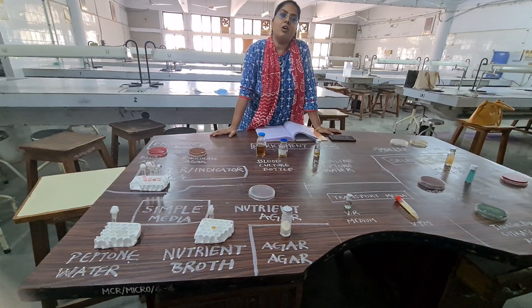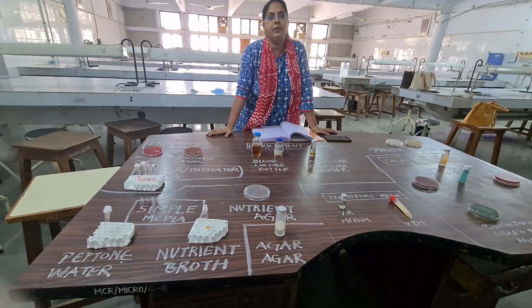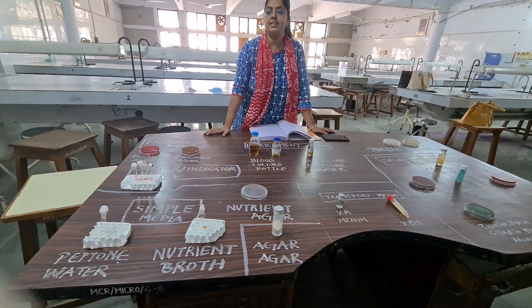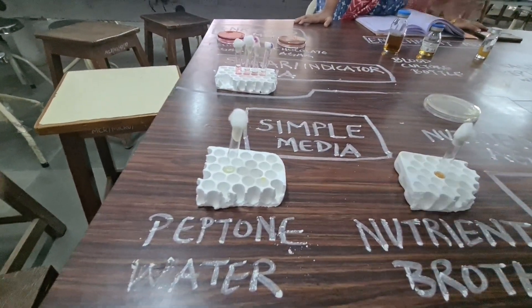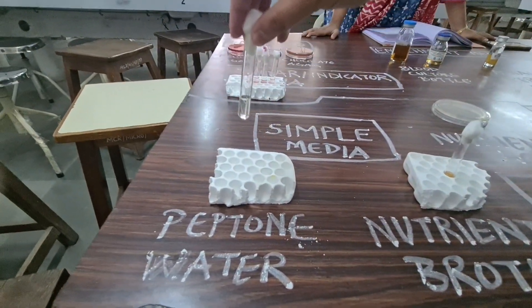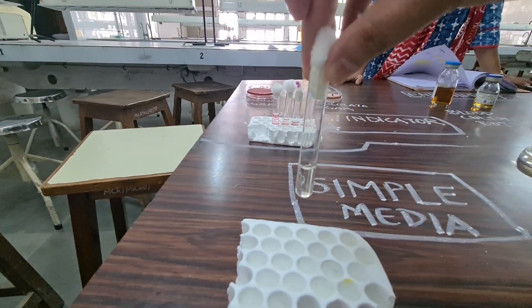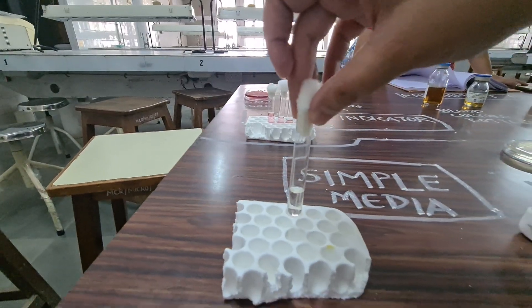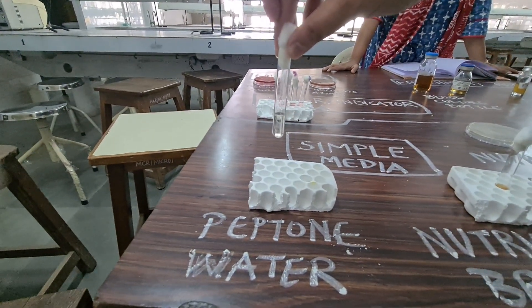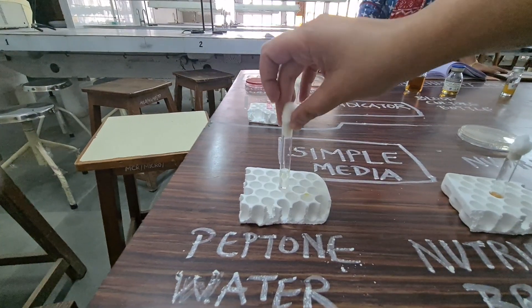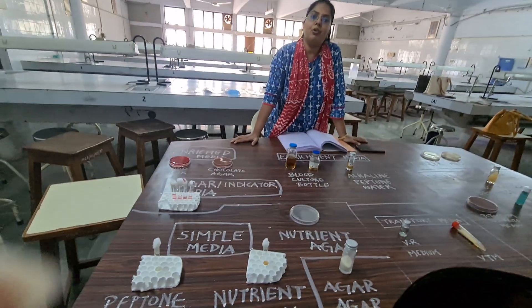The next classification is according to properties. We are dividing media into basal media or simple media. In simple media, it contains basic ingredients like peptone water, sodium chloride, water, and meat extract. Peptone water — the name itself suggests it contains peptone, water, sodium, and chloride. It is a basic medium. Non-fastidious organisms will grow in peptone water.